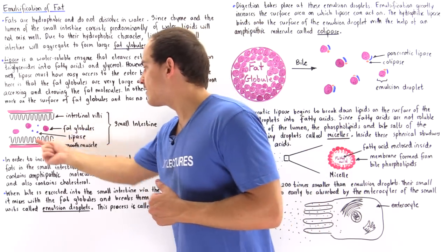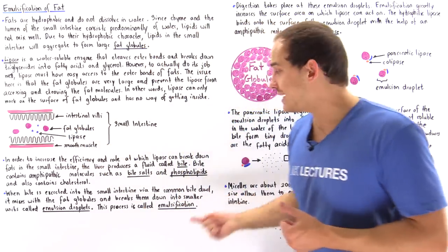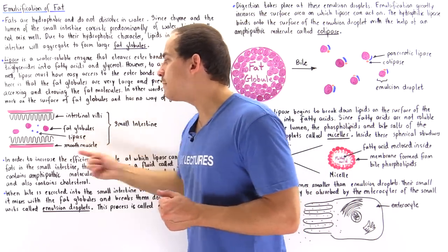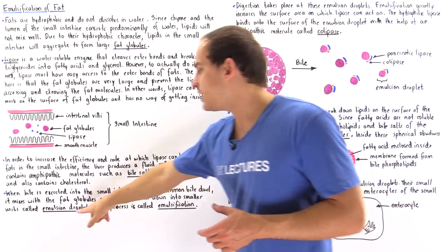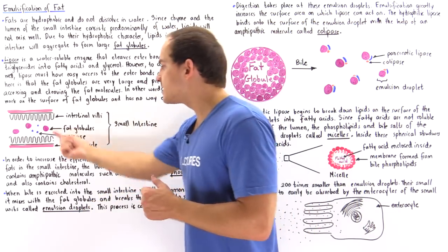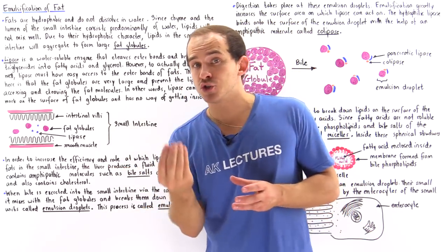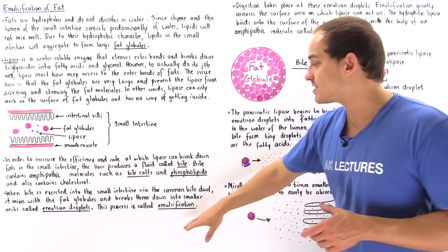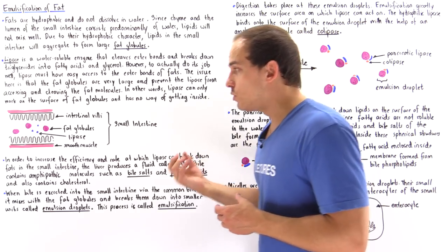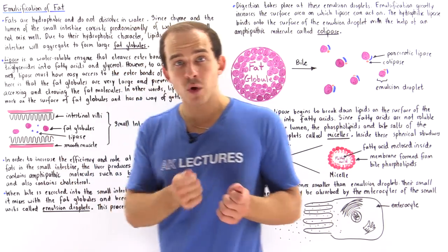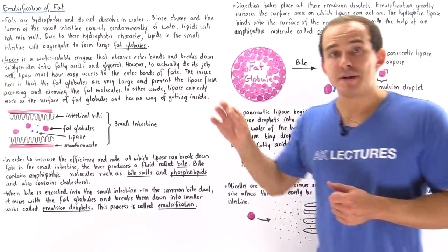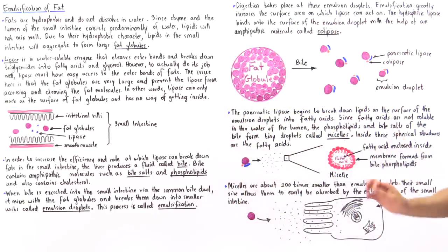Once bile is inside the lumen of the small intestine, it mixes with the fat globules because it contains hydrophobic molecules. This breaks down the fat globules into smaller structures called emulsion droplets. The process by which bile mixes with fat globules and breaks them down into smaller emulsion droplets is known as emulsification.